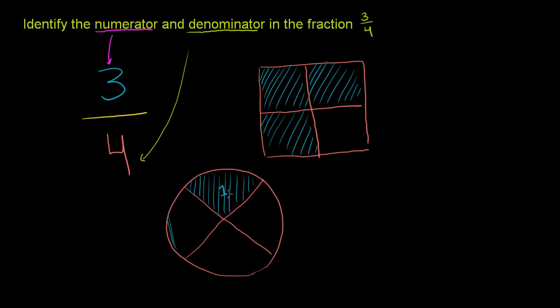So this is 1 piece, this is 2 pieces, and this is 3 pieces. The denominator, the 4, represents the total number of pieces in the pie. And the 3 represents how many of those we ate.